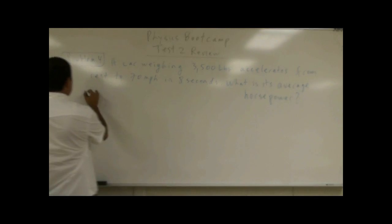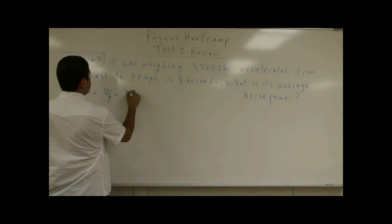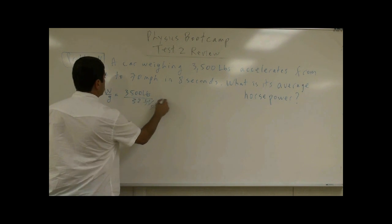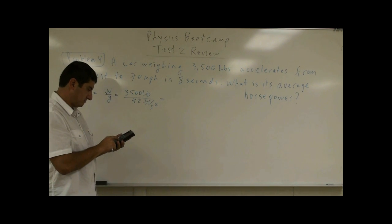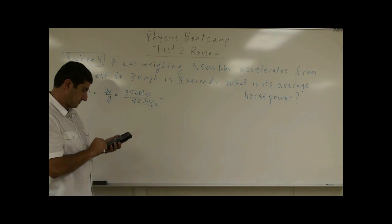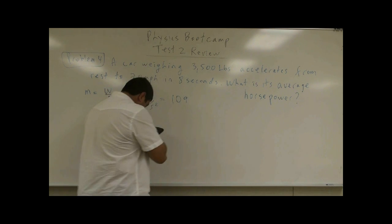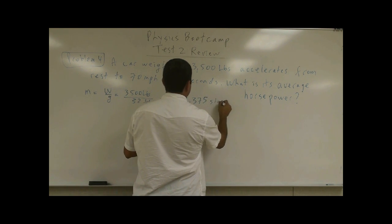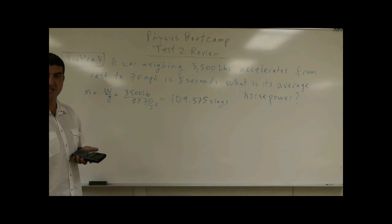So first let's calculate the car's mass. The weight divided by g, 3,500 pounds divided by 32 feet per second squared. This will give us slugs like we did before. So the car's mass is 109.375 slugs.